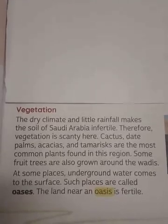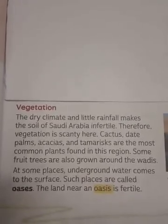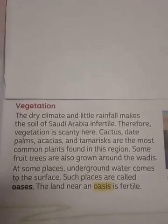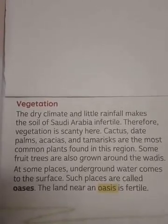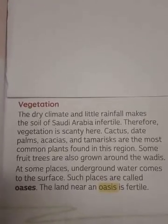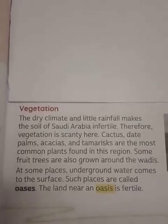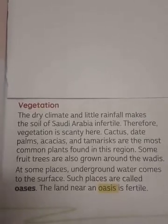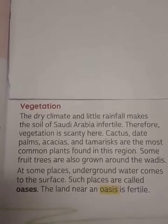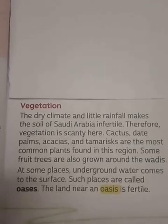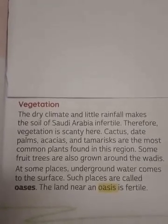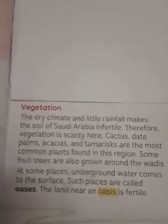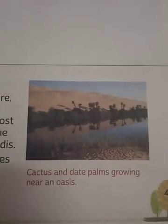Wadis are gullies where water flows during the rainy season, between two hills in the forest area. At some places during that time, underground water comes to the surface, and such places are called oases. An oasis is an area where underground water comes to the surface of the earth in the desert region. Near the oasis, cactus and date palms grow with the help of the abundant water available there, as shown in the textbook.